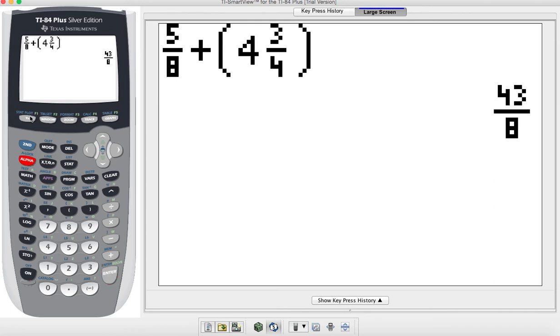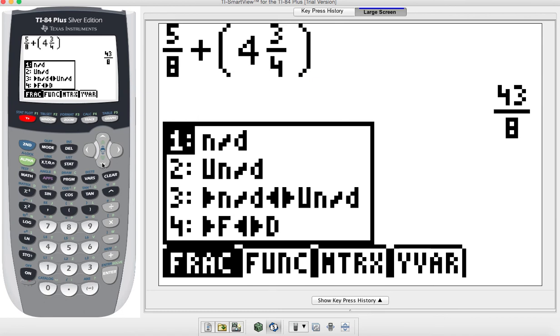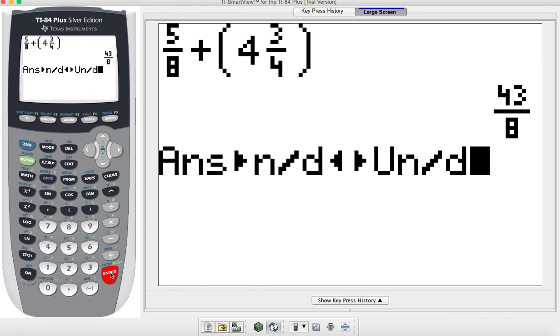So maybe I want that to be a mixed number. So I'll go down to the third option. It's going to change that improper fraction to a mixed number for me. All I got to do is hit enter. It says answer, and then it's got the improper fraction to mixed number. Hit enter. It gives me five and three over eight, which is correct. Five times eight would give me 40. 40 plus three gives me the 43 that's on top there.